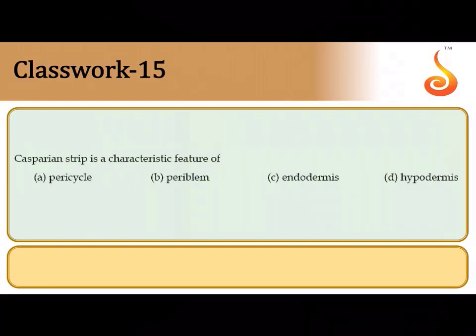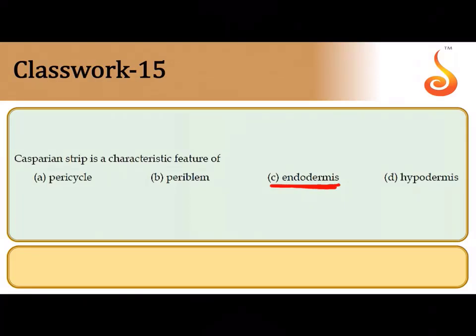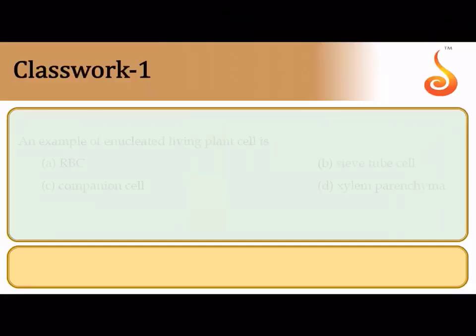Casparian strips are found in the endodermis of dicot roots and contain a suberized thickening — suberin — which is impermeable to water. Now let us move on to practice questions from the chapter Cell: The Unit of Life.